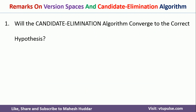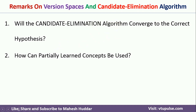The first remark on the candidate elimination algorithm and version space is: what is the guarantee that the candidate elimination algorithm will converge to the correct hypothesis? Given a set of examples, if you apply the candidate elimination algorithm, what is the guarantee that it will give you the correct hypothesis?